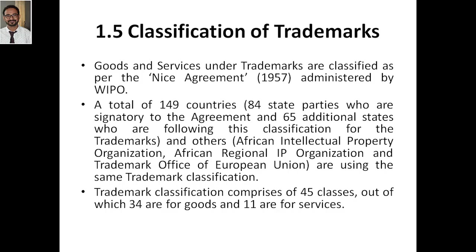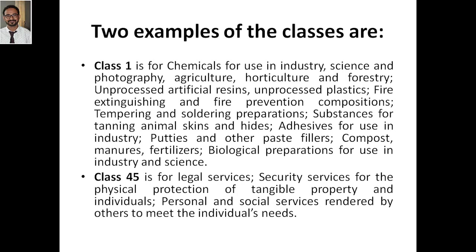Others like the African Intellectual Property Organization, the African Regional Intellectual Property Organization, and the trademark offices of European Union countries also use the same trademark classification under the Nice Agreement 1957. The trademark classification comprises 45 different classes, out of which 34 are for goods and 11 are for services.